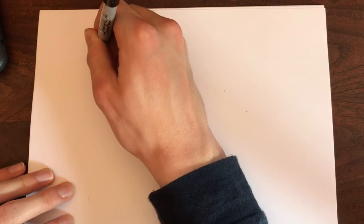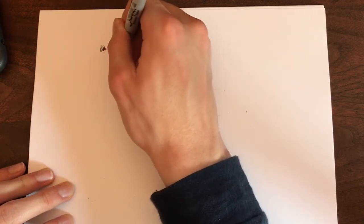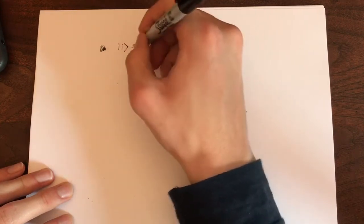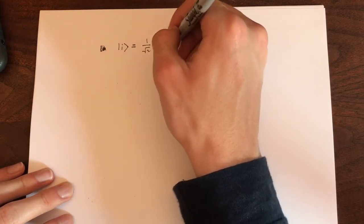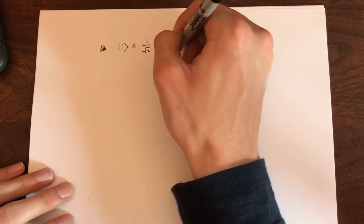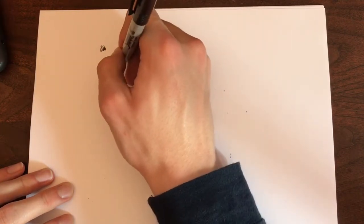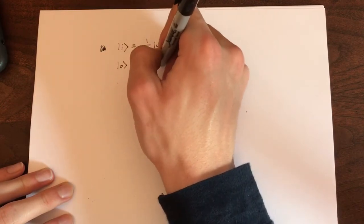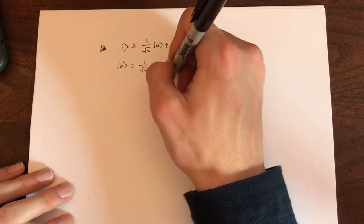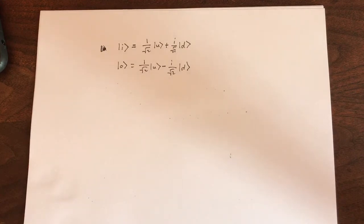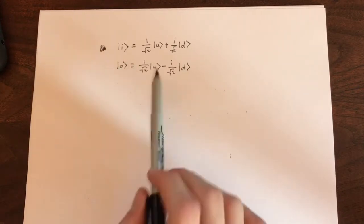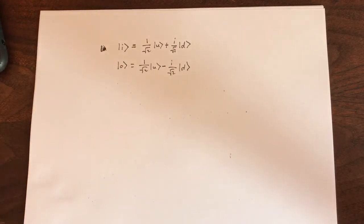When we follow this logic, we come to these vectors right here. In is 1 over root 2 up plus i over root 2 down, and out is 1 over root 2 up, you guessed it, minus i over root 2 down. And you can prove pretty easily that these are indeed orthogonal to each other, normalized, and 50-50 chance based on the other four vectors.